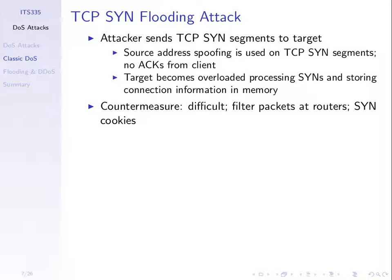The target server becomes overloaded in two ways: processing the SYN segments and allocating memory for each. If tens of thousands or even millions of SYN segments arrive per second, the server stores information for each in RAM and this overloads it, meaning normal browser requests will not get accepted. This is a classical TCP SYN flooding attack — one of the earlier prominent denial of service attacks on the internet.